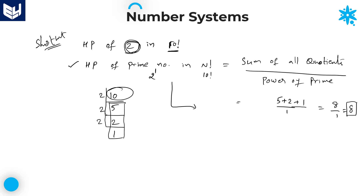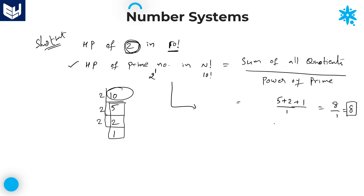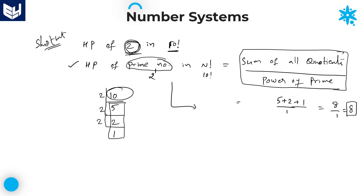We got the same result as when we calculated manually. The shortcut confirms: highest power of a prime number in n factorial equals the sum of all quotients divided by the power of that prime. Remember: whatever number is given must be a prime number — verify that first. If it is not prime, convert it into prime factors. More problems will be explained in the next sessions. I hope you enjoyed this session. Thank you, thanks for watching.